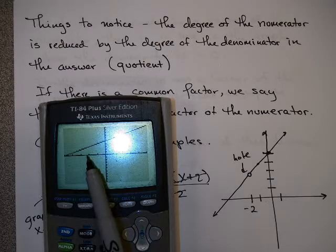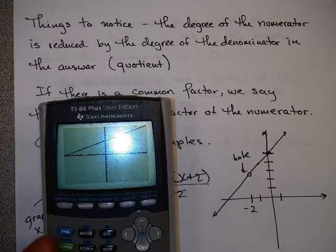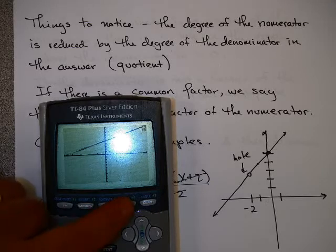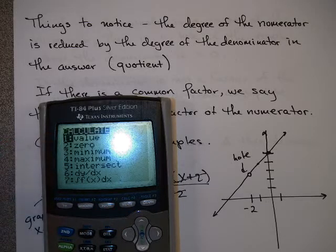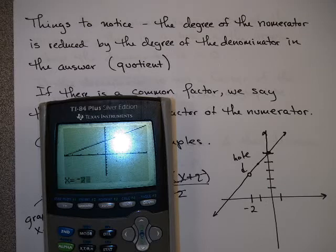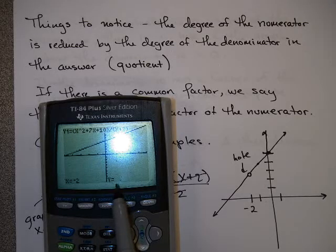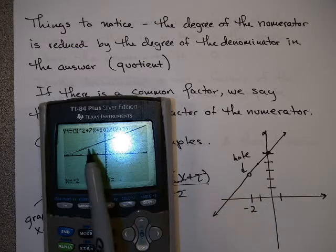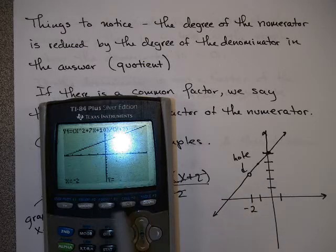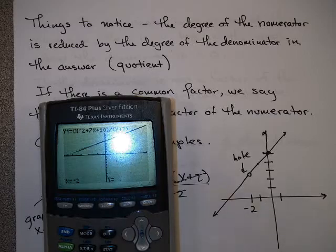And you say, hey wait a minute, it looks like there's a value at negative 2. But I'm going to hit second trace, and hit this number 1 value here. And I'm going to put in negative 2. And notice, no value shows up. What that tells me is that in reality there is a hole in this graph. It's just that the calculator doesn't show it.